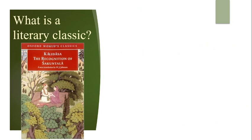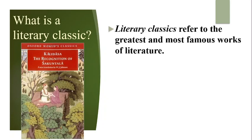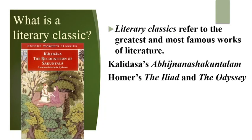We come to the question: what is a literary classic? We have already seen that a classic is an outstanding work of art. A literary classic would obviously be an outstanding poem, an excellent novel, or a short story, or a play of the highest quality, and of course, that which has stood the test of time. Two monumental classics of ancient Greece are Homer's the Iliad and the Odyssey. The ancient Greek tragedies by Sophocles, like Oedipus Rex and Antigone, are also literary classics. The Sanskrit poet and dramatist Kalidasa is considered as one of the greatest Indian classical authors. His Abhijnanashakuntalam is regarded as the greatest work in Indian classical literature.